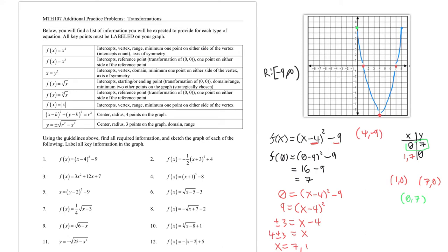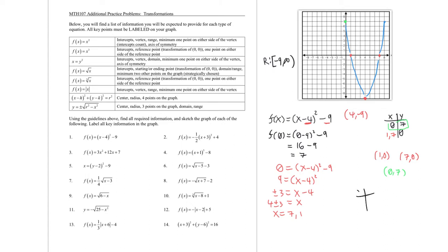Next, minimum one point on either side of the vertex. We put the vertex (4, -9) in the middle and test x = 3 and x = 5. When x = 5: (5 - 4)² - 9 = 1 - 9 = -8. Since 5 is one unit from 4, and 3 is also one unit from 4, by symmetry x = 3 also gives y = -8. So we have points (3, -8) and (5, -8) on either side of the vertex.